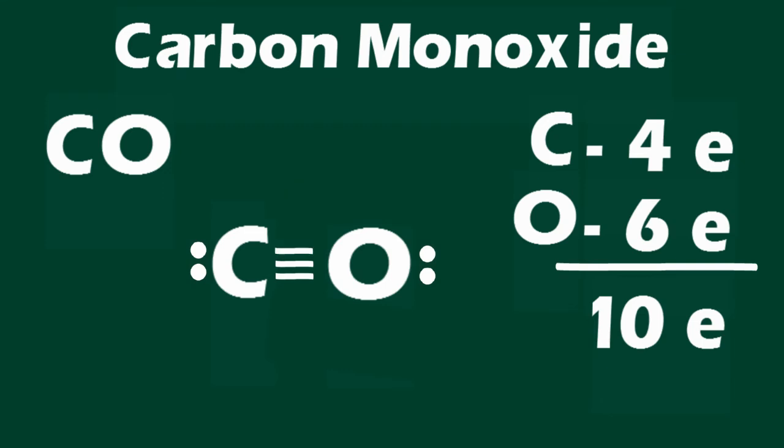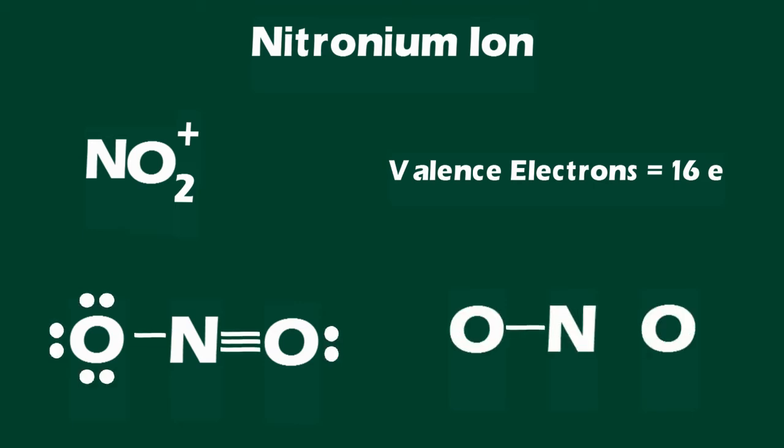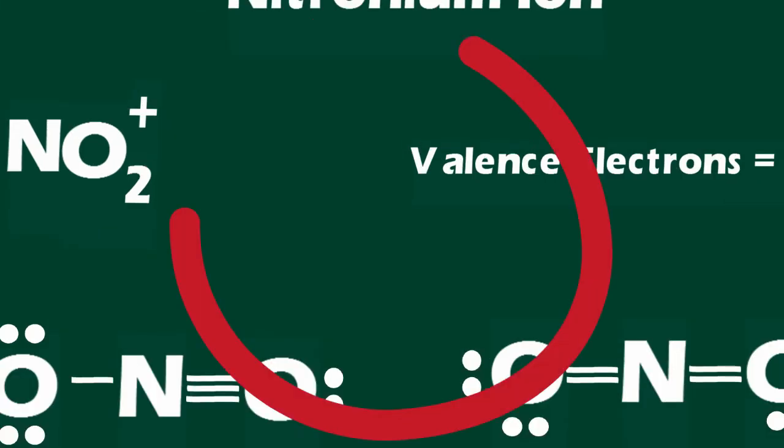How do we know that we are drawing the correct structure? This nitronium cation has two Lewis structures. Both structures seem correct. The octets of the individual atoms are satisfied in each case. However, only one of these Lewis structures is accurate. We need to assign formal charge to each atom to determine the true Lewis structure for nitronium.